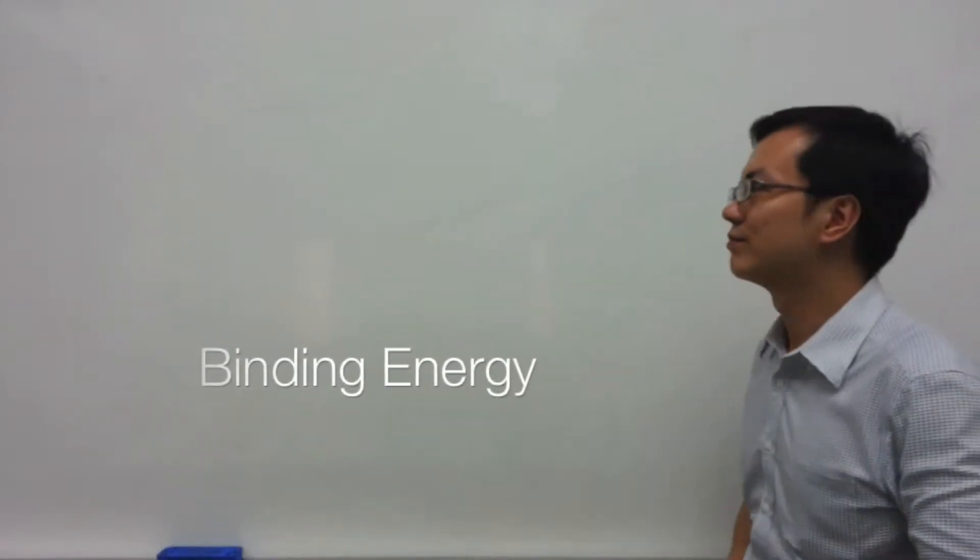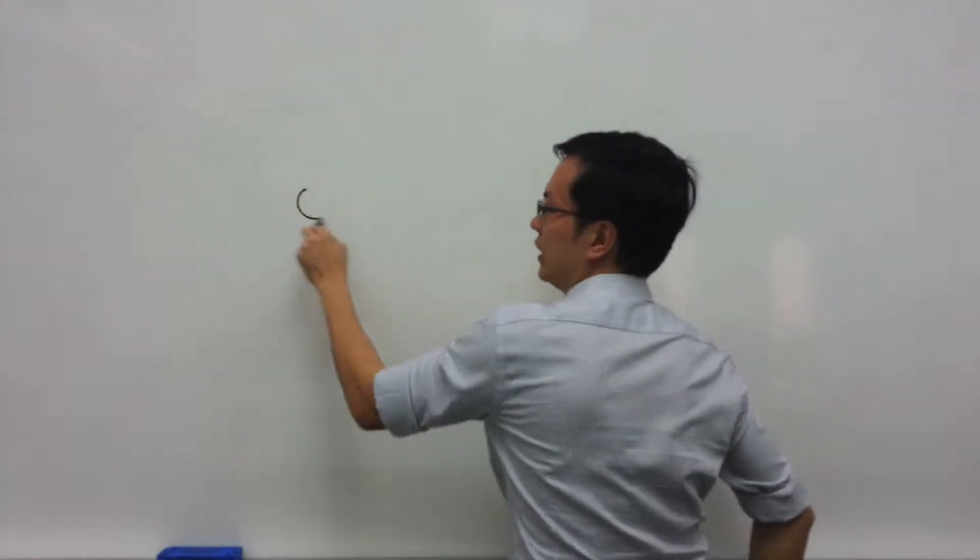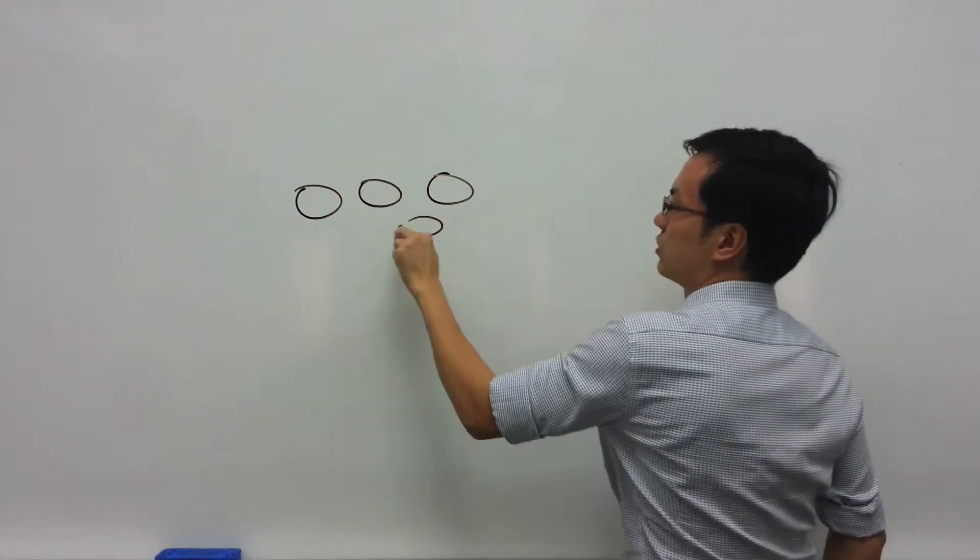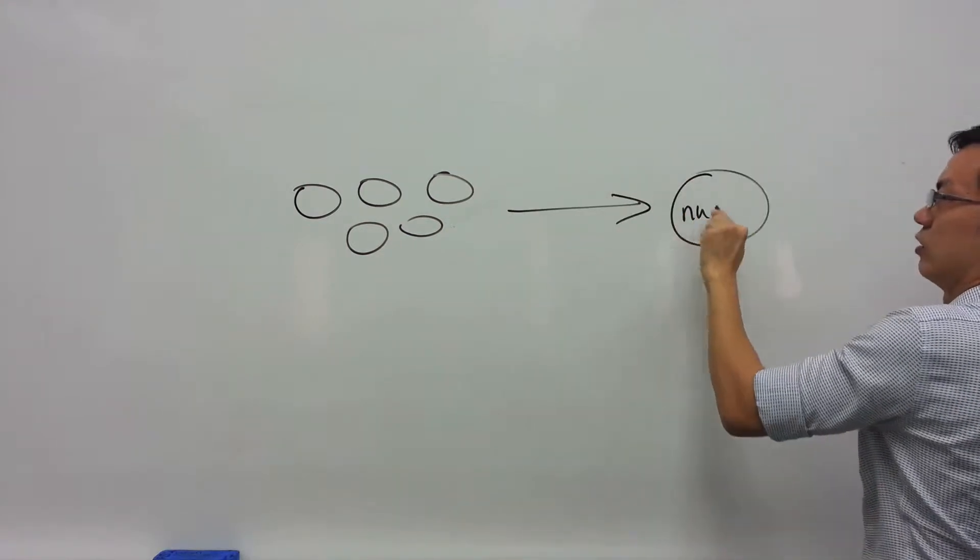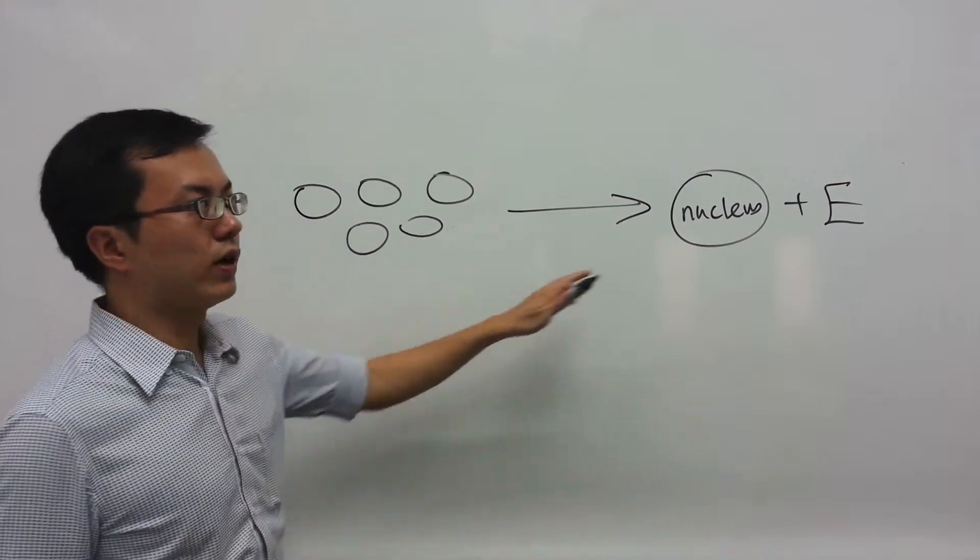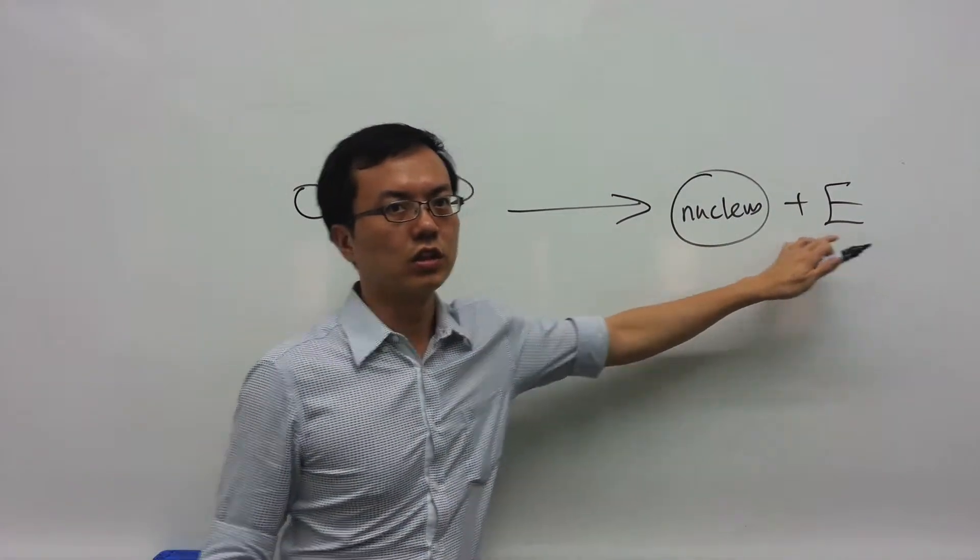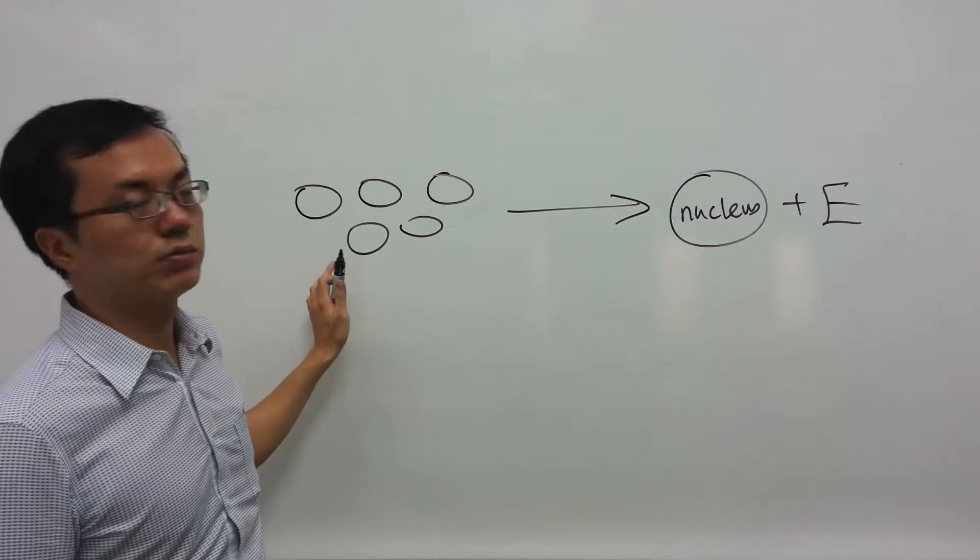What is binding energy? Binding energy is the energy that is released when the nucleus is formed from its constituent nucleons. Similarly, you will require this amount of energy in order to break the nucleus up into its separate neutrons and protons.